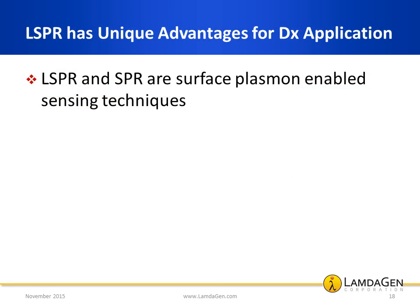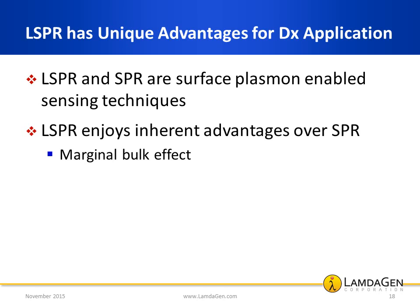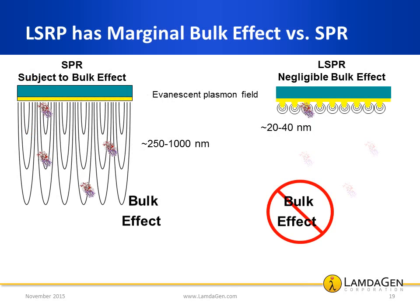In summary, SPR and LSPR are similar sensing technologies enabled by surface plasmons; however, the two technologies differ in several important ways. First, LSPR enjoys a marginal bulk effect due to the small size of the localized plasmon evanescent field. In fact, the large evanescent field of SPR is responsible for large nonspecific bulk effect and uncontrollable signal fluctuations, which also makes it generally incompatible with complex matrices. Due to these and other factors, SPR has not been successfully applied in the diagnostic world, in particular for blood-based immunoassays, where detection of low-level biomarkers requires signal amplification.